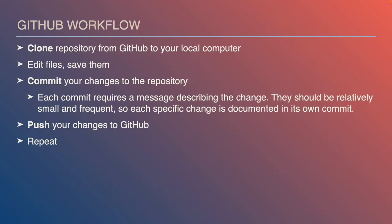The core workflow you need to get used to: first, clone a repository from GitHub to your local computer to create a local version. Edit files and save them — but remember, saving doesn't commit them to the repository, saving only saves copies on your local computer. Commit is an explicit step. Each commit requires a message describing the change, which should be pretty succinct — around 50 characters. Each specific change should be documented on its own commit, because GitHub tracks the whole history of commits, making it easier to identify where a mistake came from.